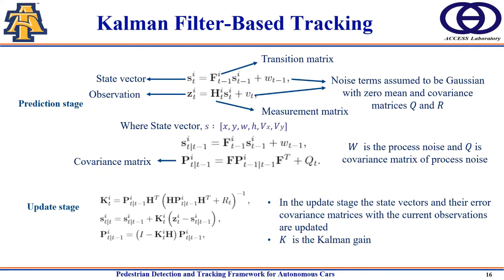One important property of the Kalman filter is that the state vector is a hidden parameter and observations provide useful information to update it. The Kalman filter-based tracking has two stages: the prediction stage, where bounding boxes for pedestrians are predicted using the state from previous frames, and the update stage, where the current frame's observations update the predicted state. In our setting, bounding boxes from RGB and depth images serve as positional information, while optical flow provides velocity information, allowing a separate observation model for each modality.